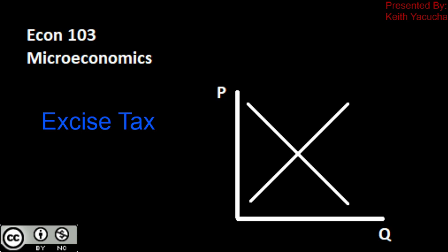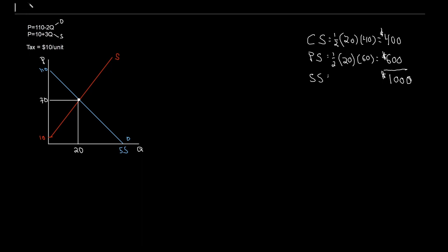Here we have our initial case. We have our demand curve as price equals 110 minus 2Q, and our supply curve as 10 plus 3Q. We have our initial market clearing price of 70 and the corresponding allocatively efficient quantity exchanged of 20. We similarly have our consumer, producer, and social surplus. Consumer surplus is willingness to pay above the price — that triangle. Producer surplus is willingness to accept below the price — that triangle. Together, our two agents give us social surplus.